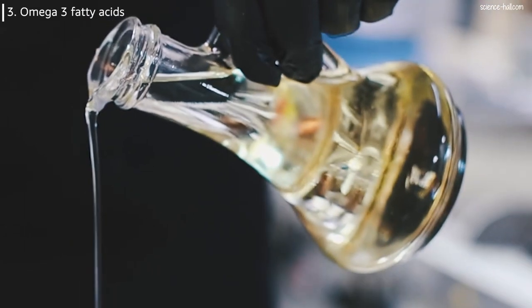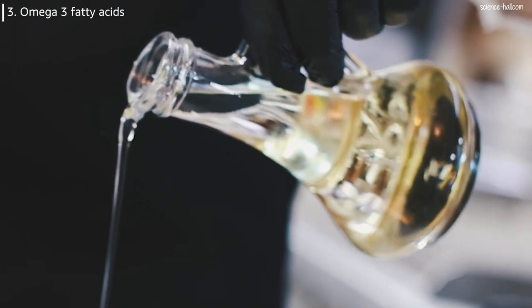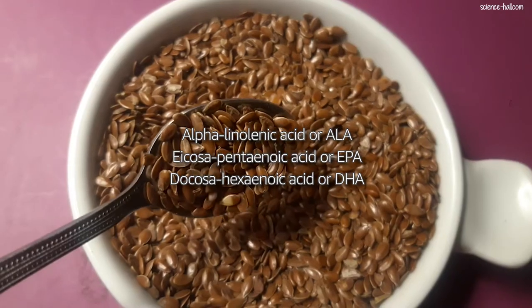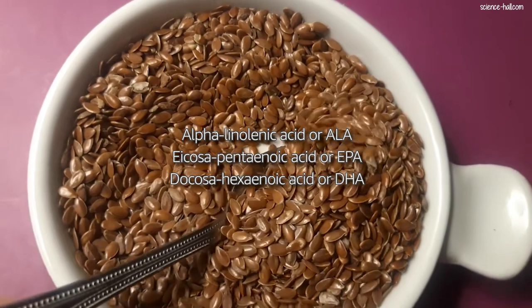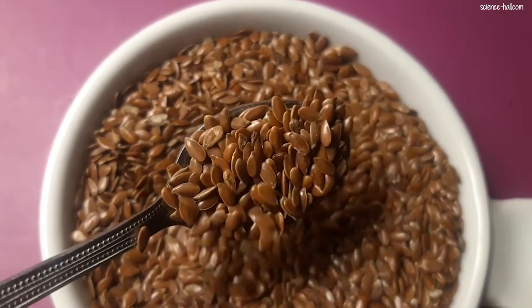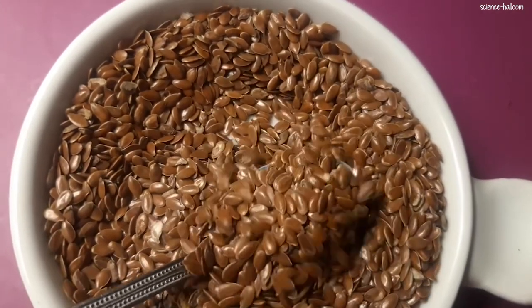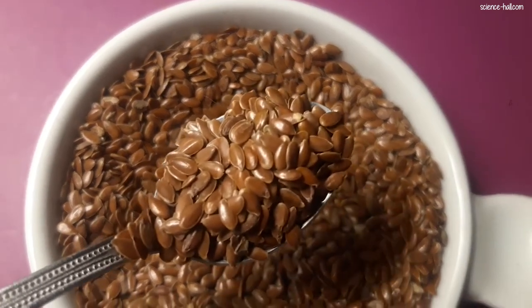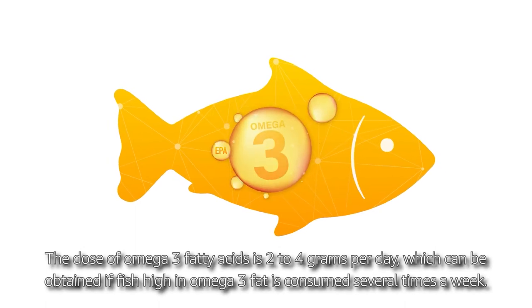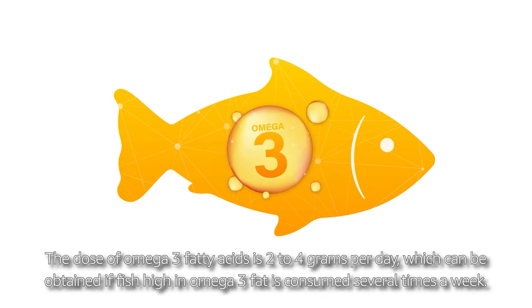Third, omega-3 fatty acids: these are also very useful in liver disease. The main three are alpha-linolenic acid (ALA), eicosapentaenoic acid (EPA), and docosahexaenoic acid (DHA). ALA is found primarily in vegetable oils such as flaxseed, soybean and canola. DHA and EPA are found in fish and other shellfish. The dose of omega-3 fatty acids is 2–4 grams per day, which can be obtained by consuming fish high in omega-3 fat several times a week.